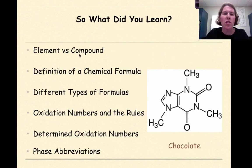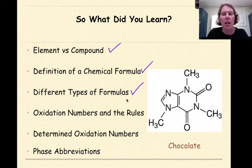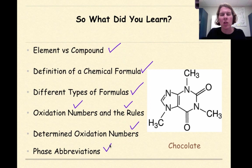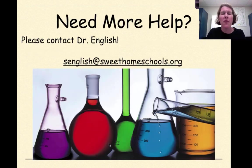So what did we learn? We talked about the difference between an element and a compound, went over the definition of a chemical formula, discussed types of formulas like molecular and empirical formulas, talked about oxidation numbers and the rules for assigning them, worked through examples determining oxidation numbers, and finally covered phase abbreviations — solids, liquids, gases, and aqueous. If you need more help, feel free to contact me. Hope you have a great day.